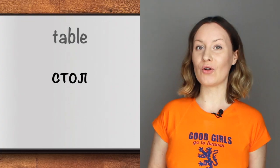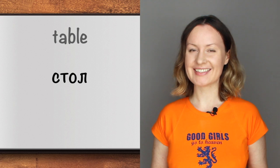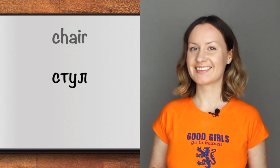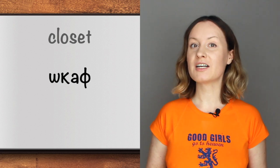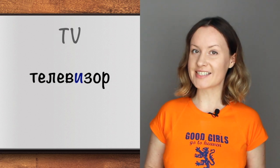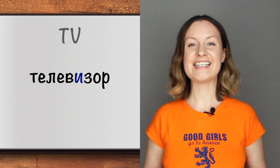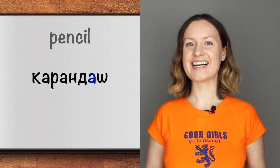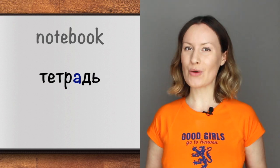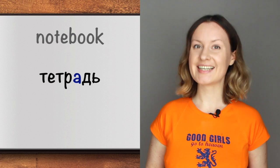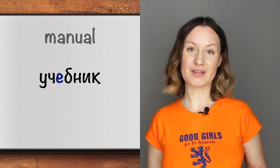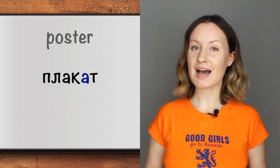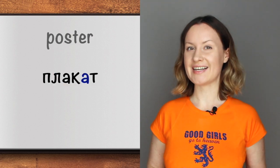Now let's learn some more words for things you can find inside the room, for example a bedroom. Стол — table. Стул — chair. Лампа — lamp. Шкаф — closet. Телевизор — television. Карандаш — pencil. Тетрадь — notebook. Ноутбук — laptop. Учебник — manual/textbook. Плакат — poster.